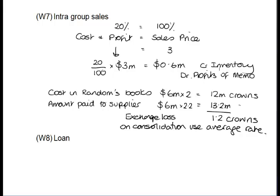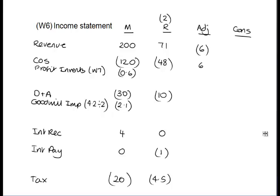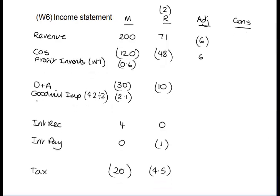Going back to the income statement, I'm now going to reflect that exchange loss. The subsidiary has incurred it, and it works out as 0.6 million dollars — remember we're translating everything using the average rate as far as the income statement is concerned. That 0.6 dollars should also be deducted from the reserves of the subsidiary in working number two.